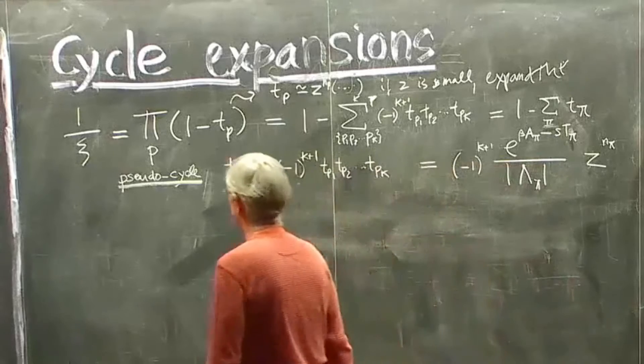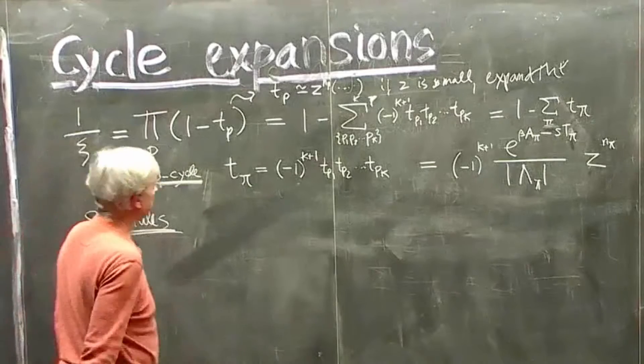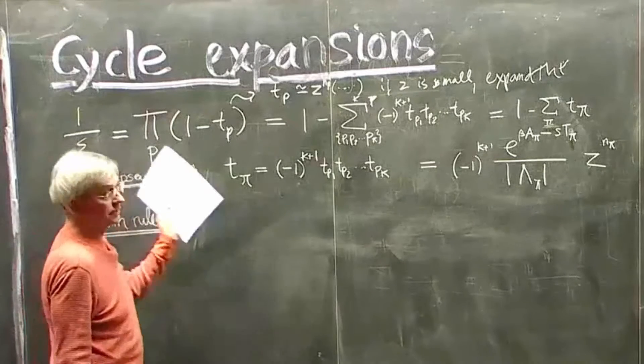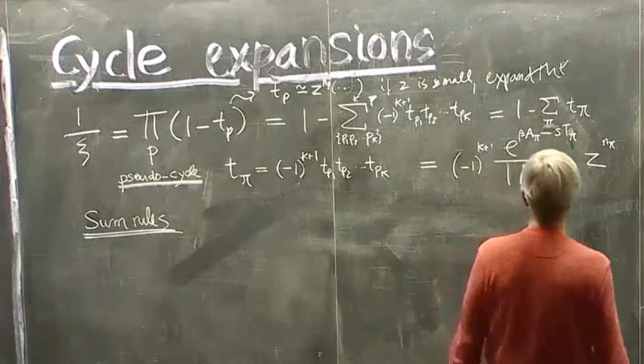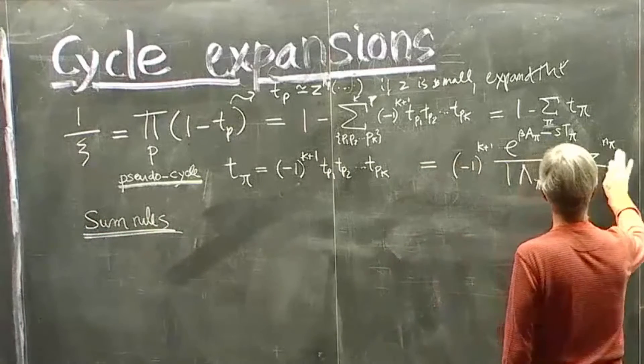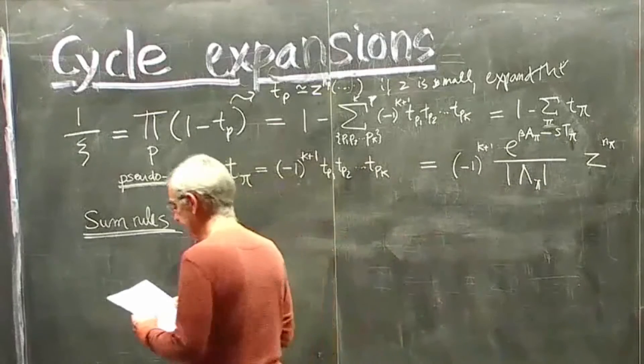But here is what can happen. Again, you might be able to evaluate your zeta function explicitly for specific values of this weighting parameter, either S or Z. And here is the simplest example.